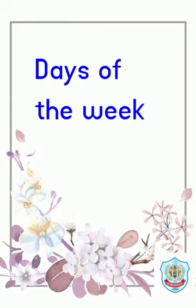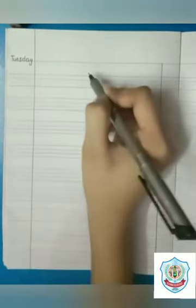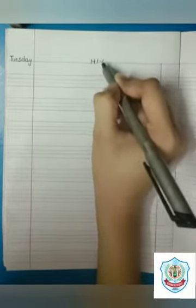Start with me. Firstly, draw a margin line by using a scale. Start writing. What day is today? It's Tuesday — T, U, E, S, D, A, Y. Tuesday. Write HW here: 12, H, W. Write it here. 12, 5, 2020 — 12 May 2020.